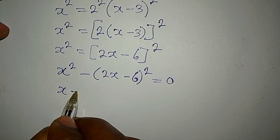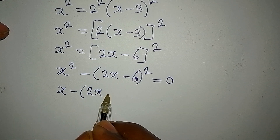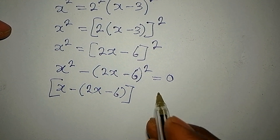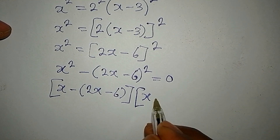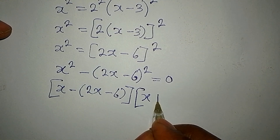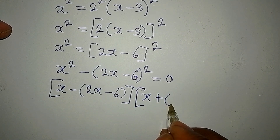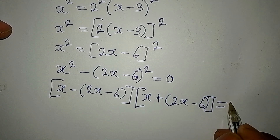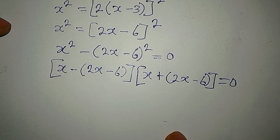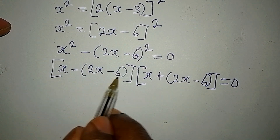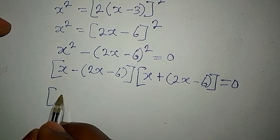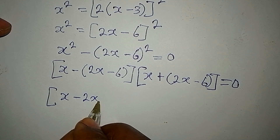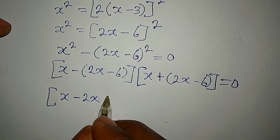Applying difference of two squares, we get: x minus (2x minus 6), all in the first bracket. Then in the second bracket we have x plus (2x minus 6), and the whole expression equals zero. Opening the first bracket: negative times 2x gives minus 2x, and negative times minus 6 gives plus 6.